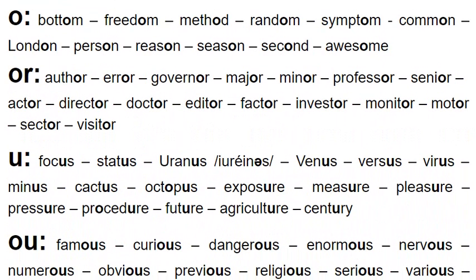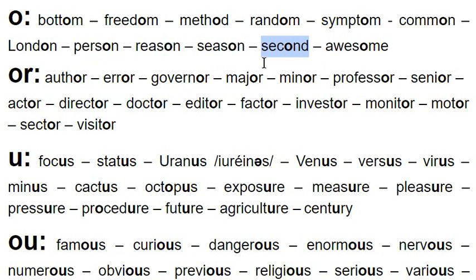Now let's look at spellings in the letter O. Bottom — it's not 'bottom', it's 'bottom'. Freedom. Method. Random. Symptom. Common. London. Person. Reason. Season. Second — we don't say 'second', that's typical in a Spanish accent. It's 'second', with the schwa.